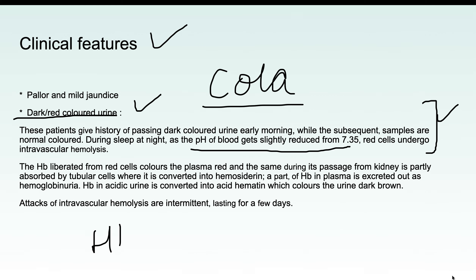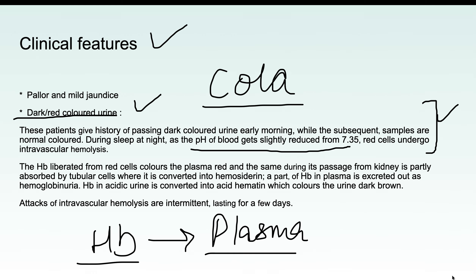The cola-colored urine occurs because hemoglobin released from RBCs enters the plasma, making it red in color. In acidic urine, this hemoglobin gets converted into acid hematin, which is dark brown in color, giving the typical cola-colored appearance.